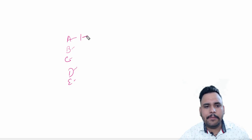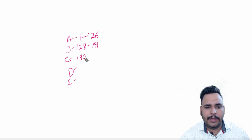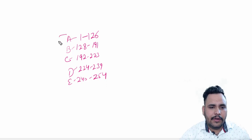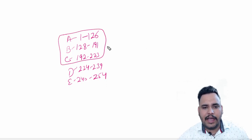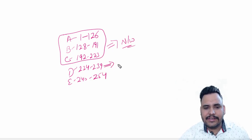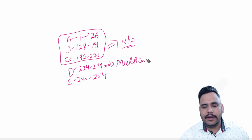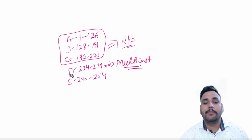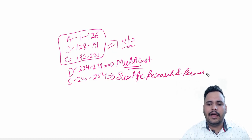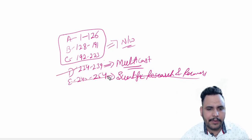If any IP starts from 1 to 126, it is from A class. 128 to 191 is B class. 192 to 223 is C class. 224 to 239 is D class and 240 to 254 is E class. First three classes — A, B, and C — are used as IP addresses in our networking, covering 1 to 223. D class is reserved for multicasting and is not used for IP addressing on PCs. E class is reserved for scientific research and is used by the IANA team only.